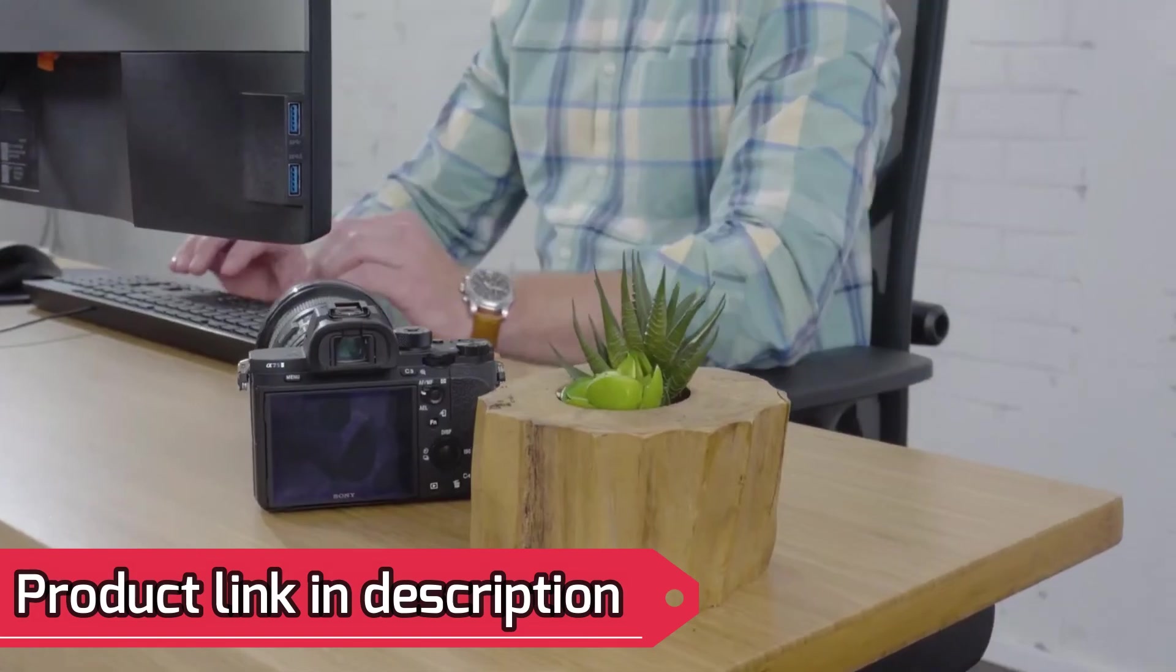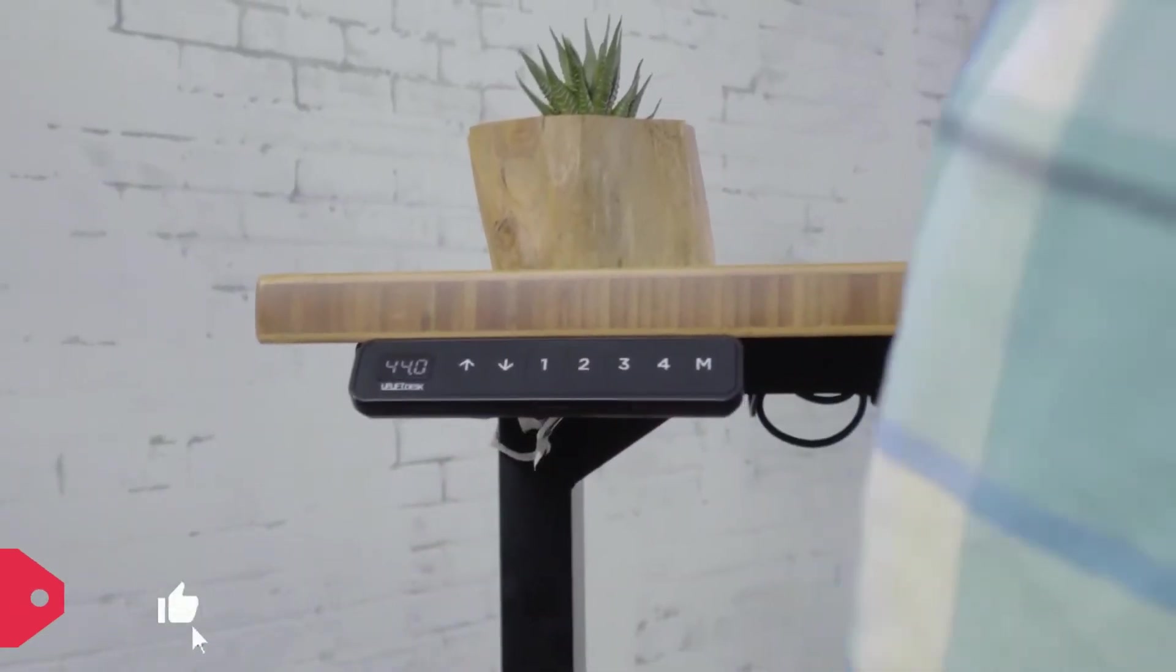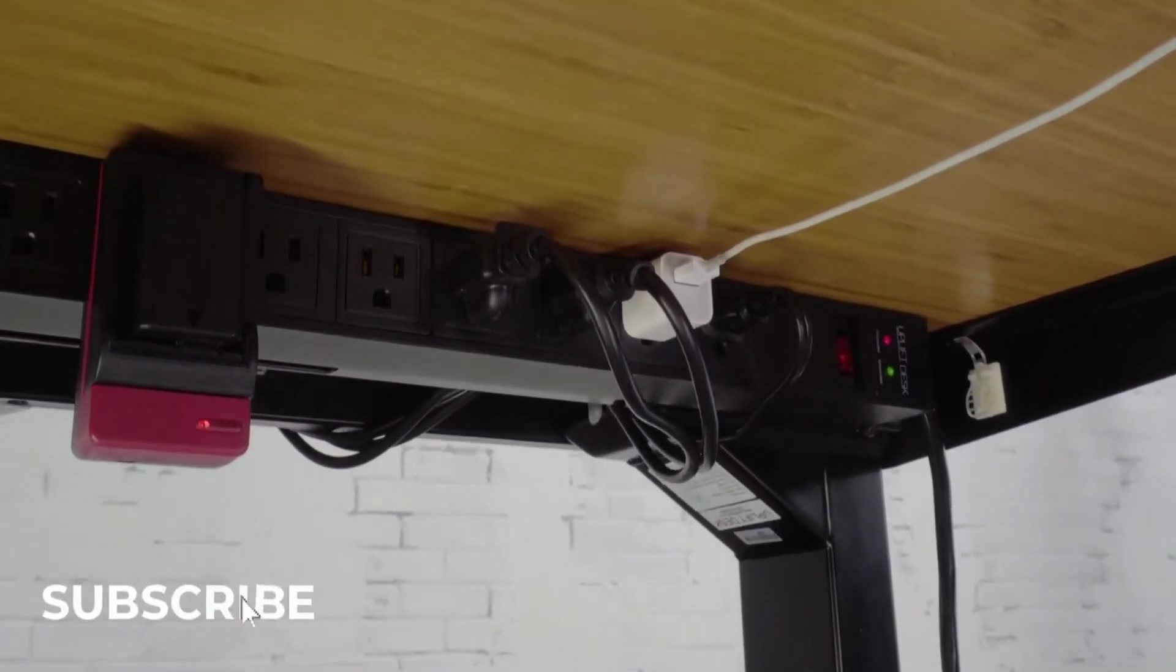By plugging all of your desk equipment into these 8 outlets, you prevent your cords from pulling on a wall outlet when you raise or lower your height-adjustable desk.